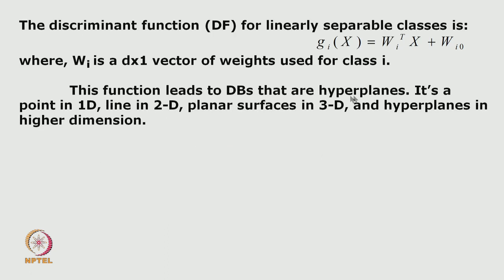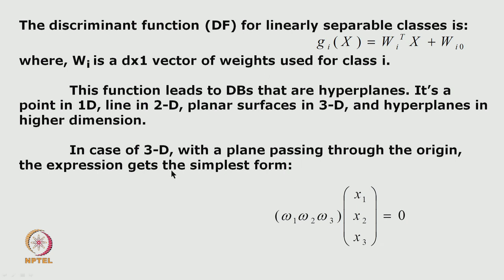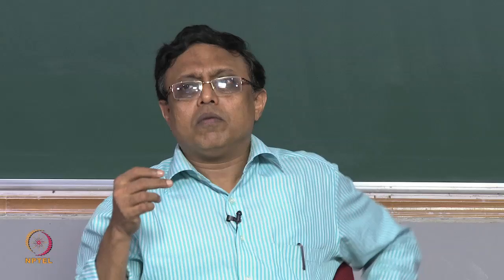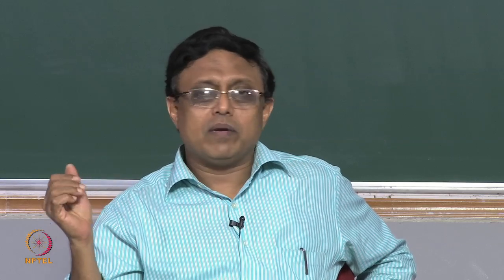This linear discriminant function leads to decision boundaries that are hyperplanes in higher dimensions: a point in 1D, a line in 2D, a planar surface in 3D, and hyperplanes in higher dimensions. In 3D the simplest case is a plane, with the weight vector w having three components and x being a 3-dimensional vector — a simple dot product. The plane can pass through the origin as a special case, or be offset in 2D or higher dimensional space.